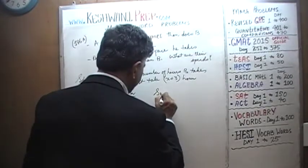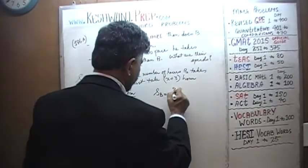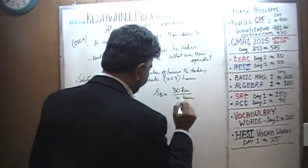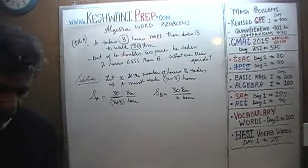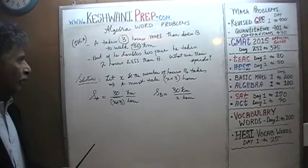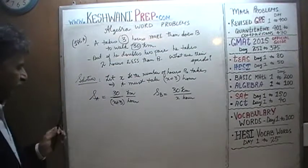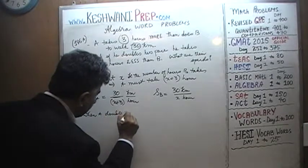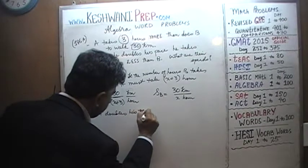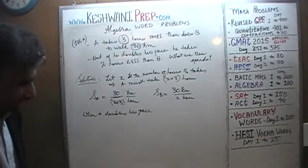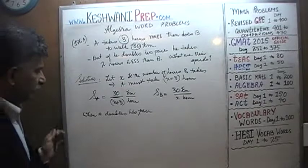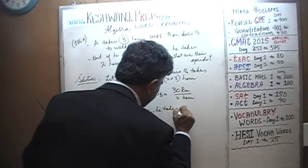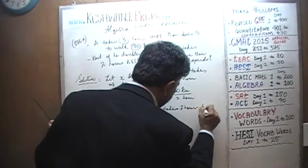Similarly, the speed of B is straightforward. B is also going 30 kilometers, but he takes only X hours. Now what happens when A doubles his pace? We are told that when A doubles his pace, he takes two hours less than B.